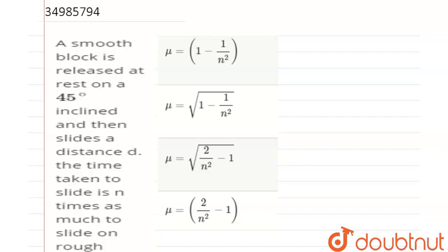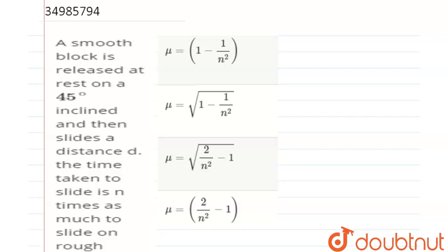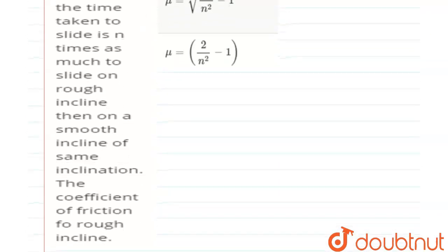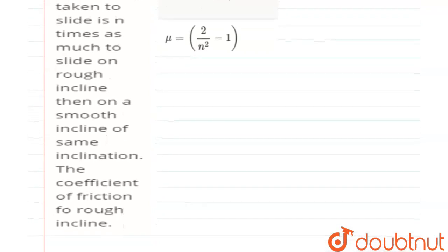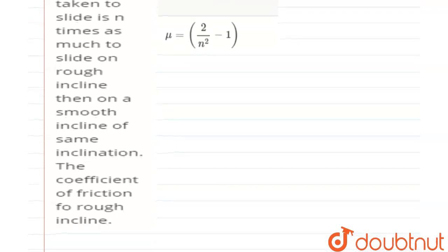Hello everyone. What have we given in this question? A smooth block is released at rest on a 45-degree incline and then slides a distance d. The time taken to slide is n times as much as to slide on a rough surface.